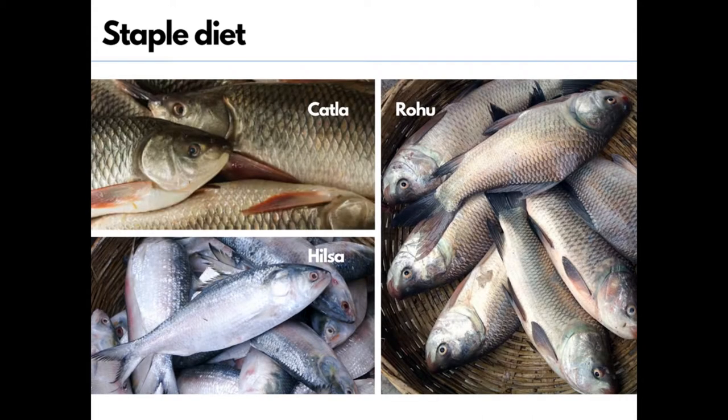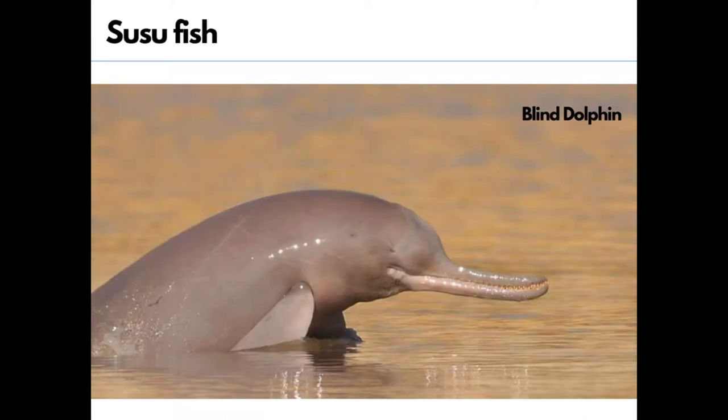Some popular varieties of fish seen here are rohu, katla, and hilsa. In the fresh waters of the rivers Ganga and Brahmaputra, a local variety of dolphin — locally called susu, also known as the blind dolphin — is seen. The presence of susu is an indicator of the health of the river. However, untreated industrial and urban waste with high chemical content is killing the species.